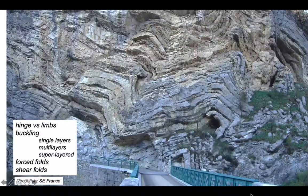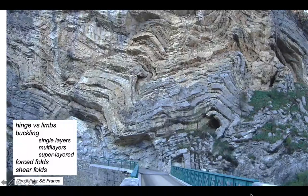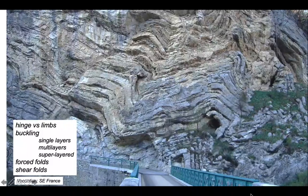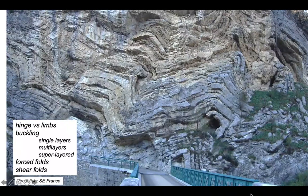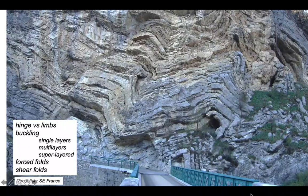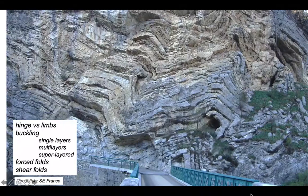Well, we're going to look at the difference between hinges and limbs. We're going to spend quite a lot of time looking at the process of buckling. We'll look at buckling in single layers and on multi-layer sequences and on rocks which are super-layered rather like a stack of paper. And then we'll just look briefly at two other processes by which rocks can fold, so-called forced folds and shear folds.